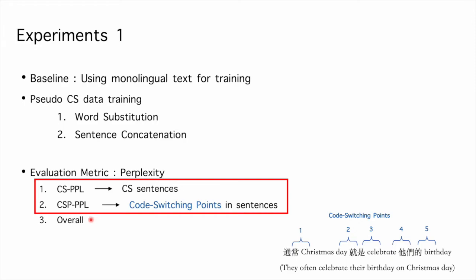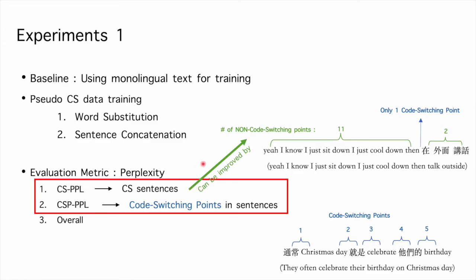And the third one is perplexity of whole corpus. Due to the difference between CS-PPL and CSP-PPL, these perplexities are separately measured. Clearly, improvement in CS-PPL do not necessarily translate to improvement in CSP-PPL, as code-switching sentences often contain a majority of non-code-switching points. CS-PPL is likely to benefit more from improving monolingual perplexity than improving CSP-PPL.